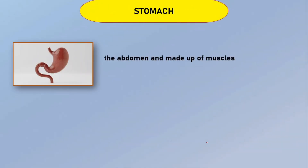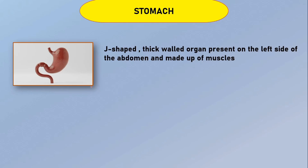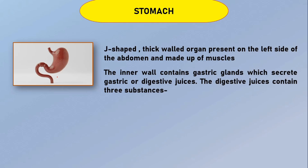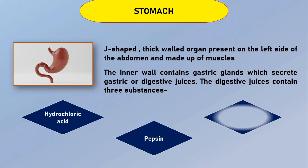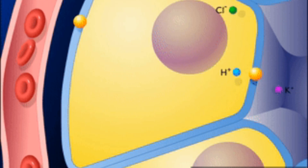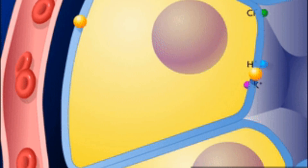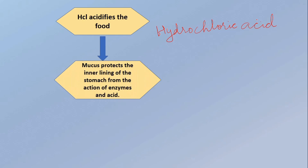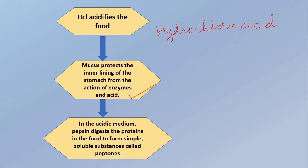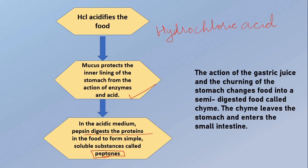From the esophagus, food goes into the stomach — a J-shaped, thick-walled organ present on the left side of the abdomen, and the widest part of the alimentary canal. The inner wall of the stomach has gastric glands that secrete gastric or digestive juices containing three substances: hydrochloric acid, pepsin and mucus. Hydrochloric acid kills harmful bacteria that enter with food and makes the medium acidic to enhance enzyme action. Mucus protects the inner lining of the stomach from enzymes and acid. In the acidic medium, pepsin digests proteins into simpler substances called peptones. The food is converted into a partially digested semi-solid called chyme, which then enters the small intestine.